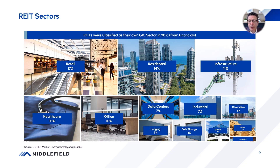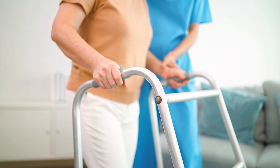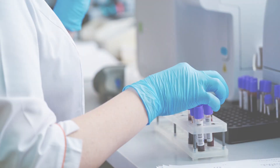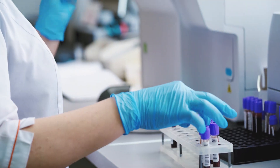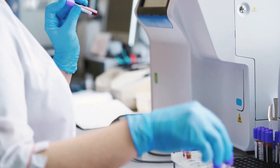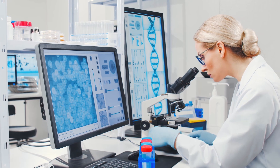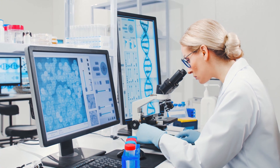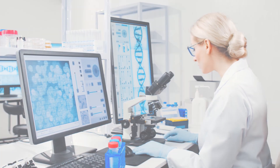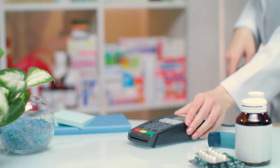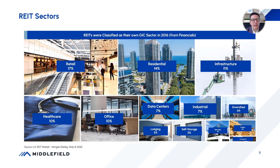Healthcare REITs comprise retirement homes, long-term care homes, and life science businesses whose buildings are occupied by companies in the biomedical area. These are specific types of buildings. You've also got medical office buildings whose tenants are doctors, nurses, clinics, and pharmacies — all within the umbrella of healthcare REITs.